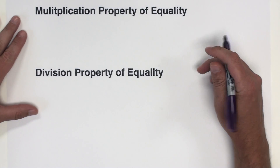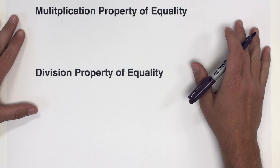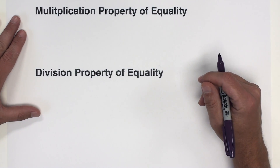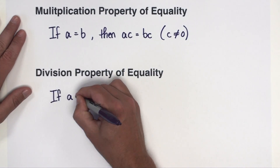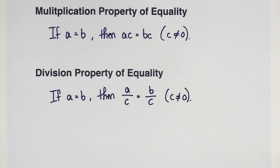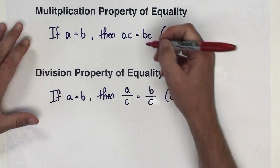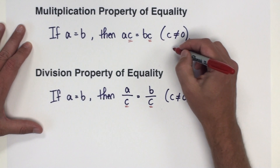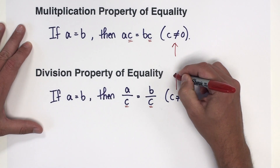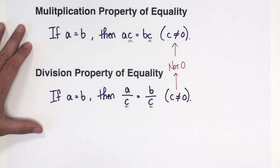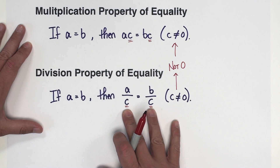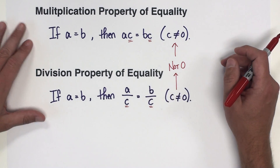The next two properties of equality that go nicely together are multiplication and division properties of equality. Just like addition and subtraction, these simply allow you to either multiply or divide by the same number on both sides of the equation, provided that number is not 0. Multiplying by 0 cancels everything out on both sides, and of course dividing by 0 is undefined. So for any number other than 0, these properties hold true.